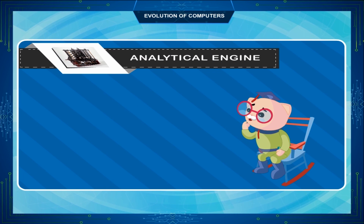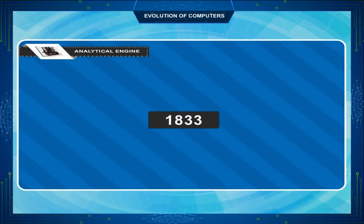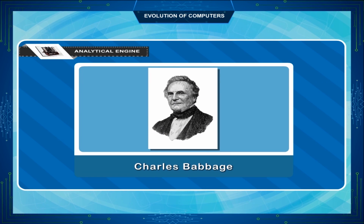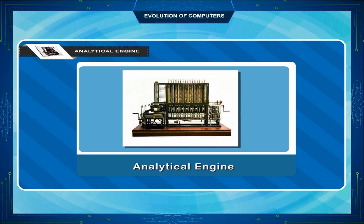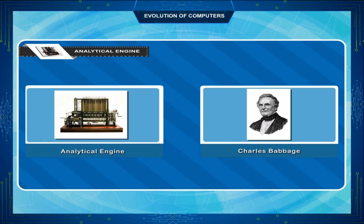Analytical Engine: In the year 1833, a scientist from England known as Charles Babbage proposed the idea of a mechanical general purpose computer. This device was called the Analytical Engine and it is widely accepted as the first design of a mechanical computer. It includes many features which are used in today's computers and was more useful and versatile than the Difference Engine also made by Babbage.